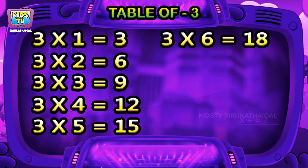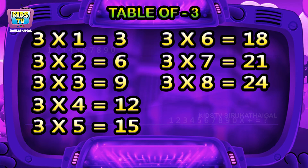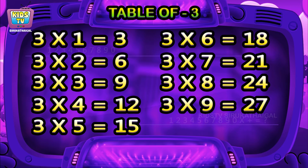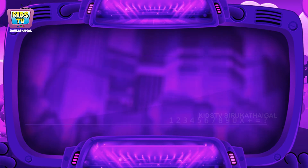Three sixes are eighteen, three sevens are twenty-one, three eights are twenty-four, three nines are twenty-seven, three tens are thirty.